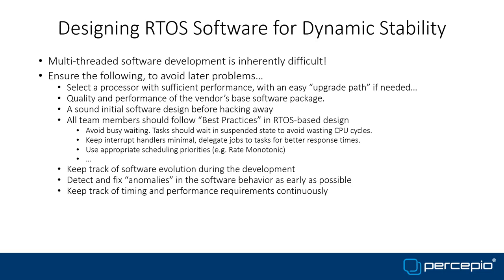If you have important performance and timing requirements, keep track of them throughout the project and start as early as possible. Otherwise, it can be really hard to optimize at the end. For example, if a task needs to run every 5 milliseconds but takes 7 milliseconds to execute, what do you do? Many of these things require runtime monitoring — you can't figure this out just by looking at source code.